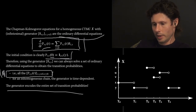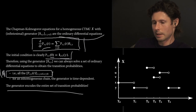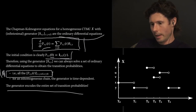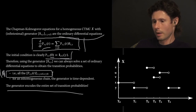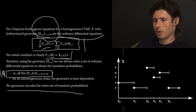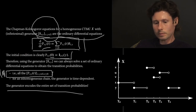The generator is a very simple object — just a bunch of numbers for each pair of states. In a way, it's a matrix: for a finite number of states, it's literally a matrix. That's all you need to define your continuous-time Markov chain. A continuous-time Markov chain can be completely described by its generator, very much like a one-step transition probability matrix — just one number for every single pair of states.